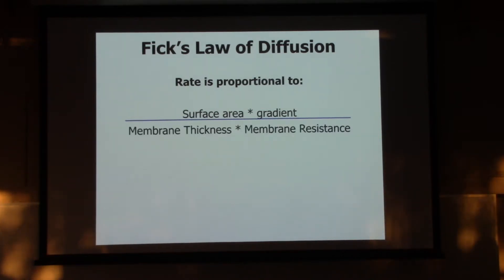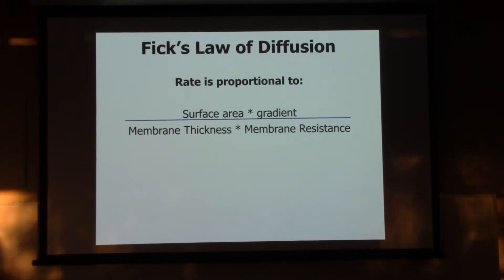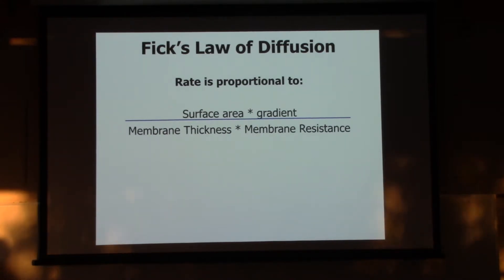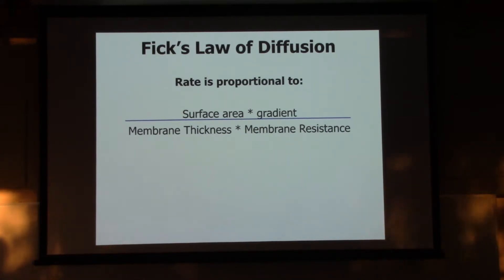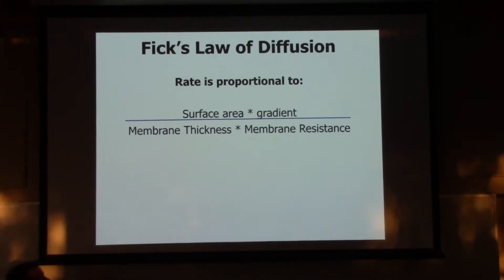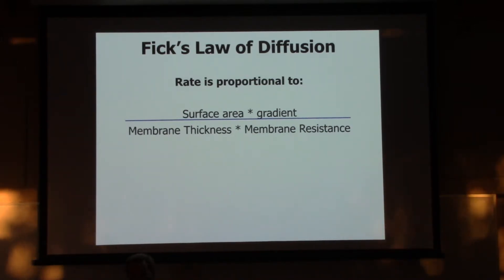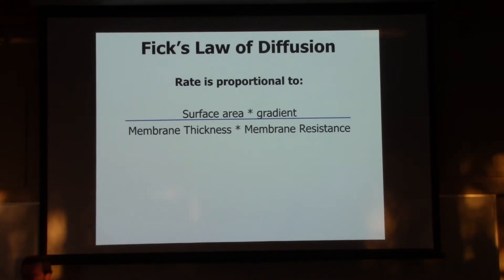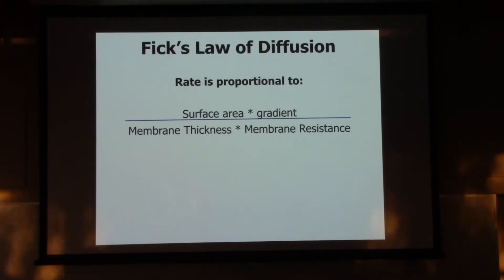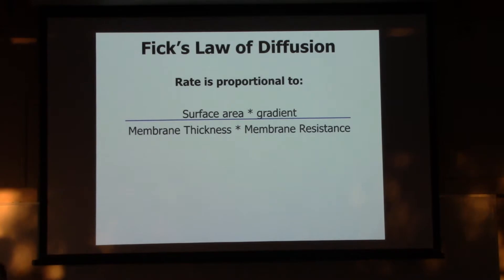And it's inversely proportional to the membrane thickness. This is really thin - remember the respiratory membrane. It's made up of one skinny layer of cells of the alveoli and one skinny layer of cells of those pulmonary capillaries. For internal gas exchange, it's just a thin layer of cells making up those capillaries. The membrane resistance - oxygen and carbon dioxide just diffuse right across those cells, no problem.